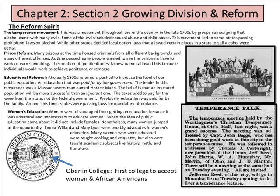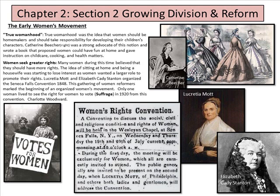Women started to become more educated. Prior to this, women were not very educated other than in what they needed to do within the home. The early women's movement: true womanhood was the idea that women should be homemakers and take responsibility for developing their children's character. Catherine Beecher was a strong advocate of this notion. But women wanted to do more outside the home, and you'll start to see the idea that they wanted to vote — though that would not come until 1920. Suffrage is the right to vote — not suffering, suffrage.